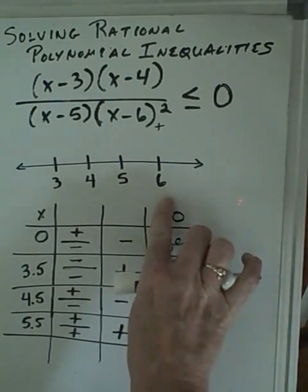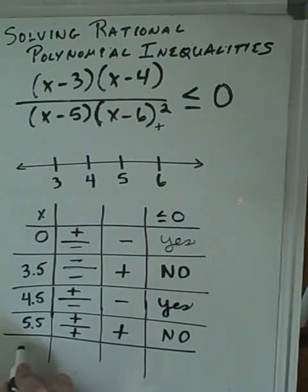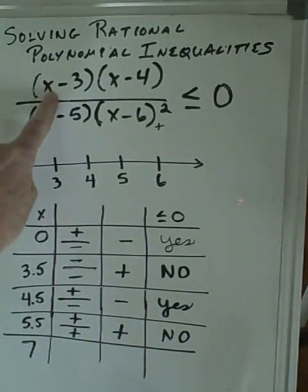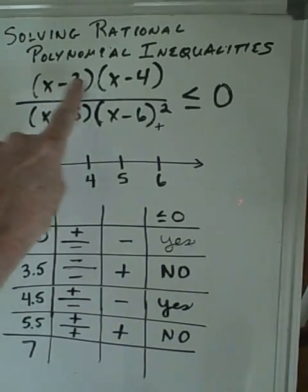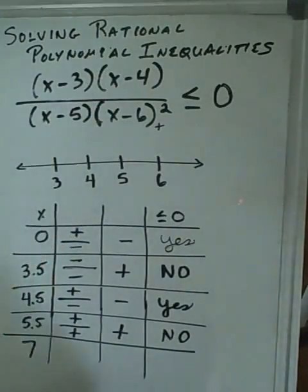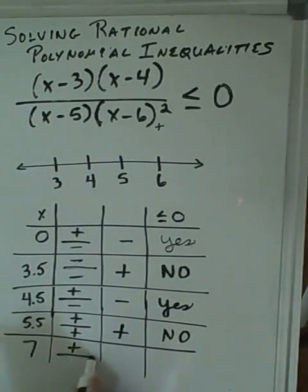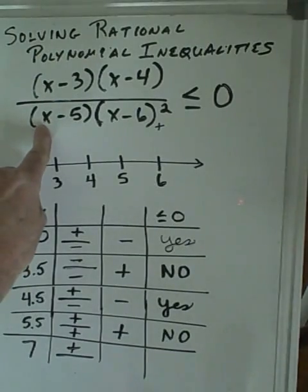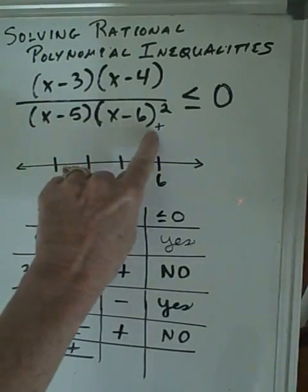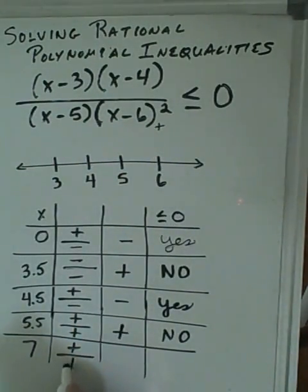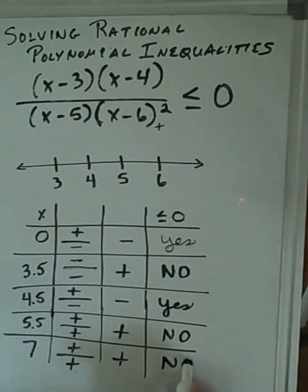And then finally, we have to get a number greater than 6, so we could try 7. 7 minus 3 is positive. 7 minus 4 is positive, so we get a positive numerator. 7 minus 5 is positive, and this one again is always positive. Positive over positive is positive, so the answer is no.